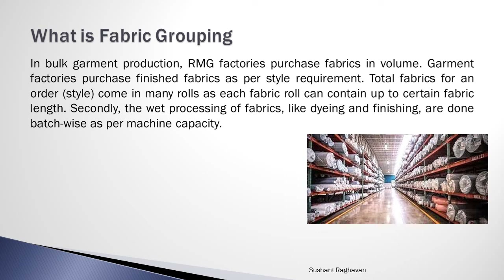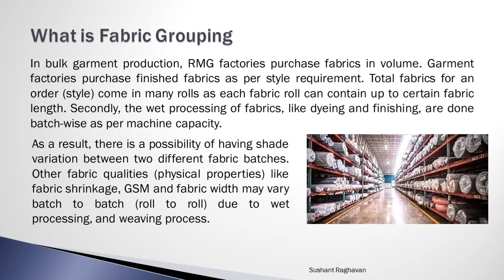Secondly, the wet processing of fabrics like dyeing and finishing are done batch-wise as per machine capacity. As a result, there is a possibility of having shade variation between two different fabric batches. Other fabric qualities and physical properties like fabric shrinkage, GSM, and fabric width may vary batch to batch, roll to roll, due to wet processing and weaving process.